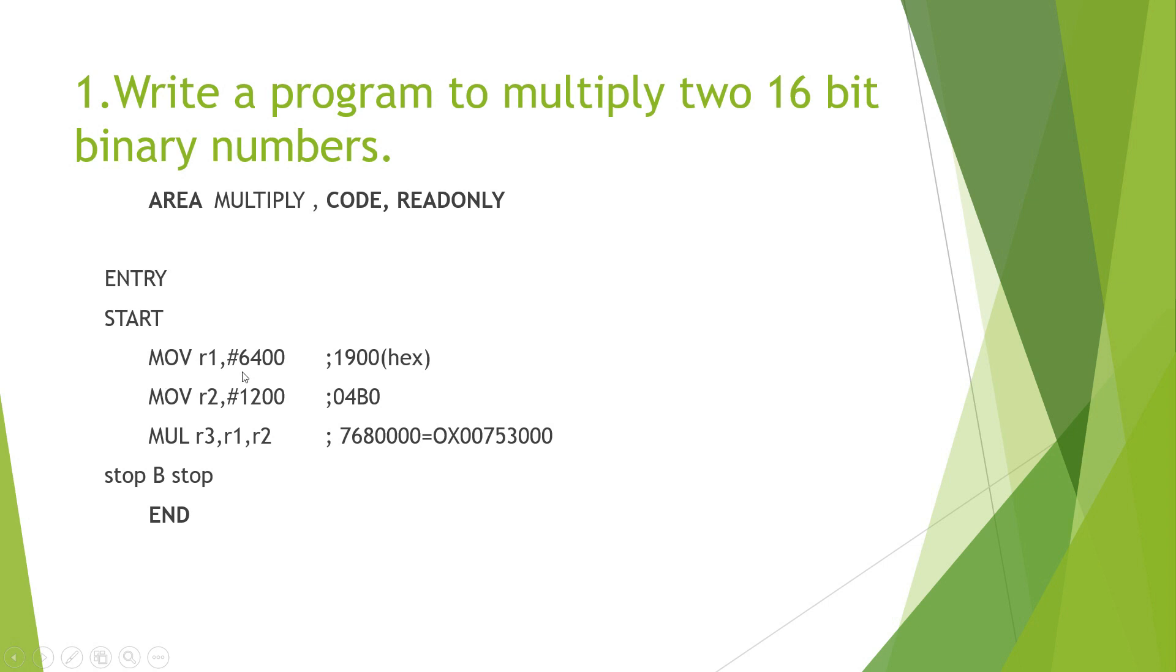It is an immediate value. We are moving the value that is 6400. So, we precede the number with a hash symbol. R1 now contains the value 6400. But in the assembler, we will be storing the value in the hexadecimal number which is 1900 hex. We move the next number that we have to multiply to the register R2. MUL is an instruction which multiplies the contents of the register R1 and R2 and the result is stored in R3.